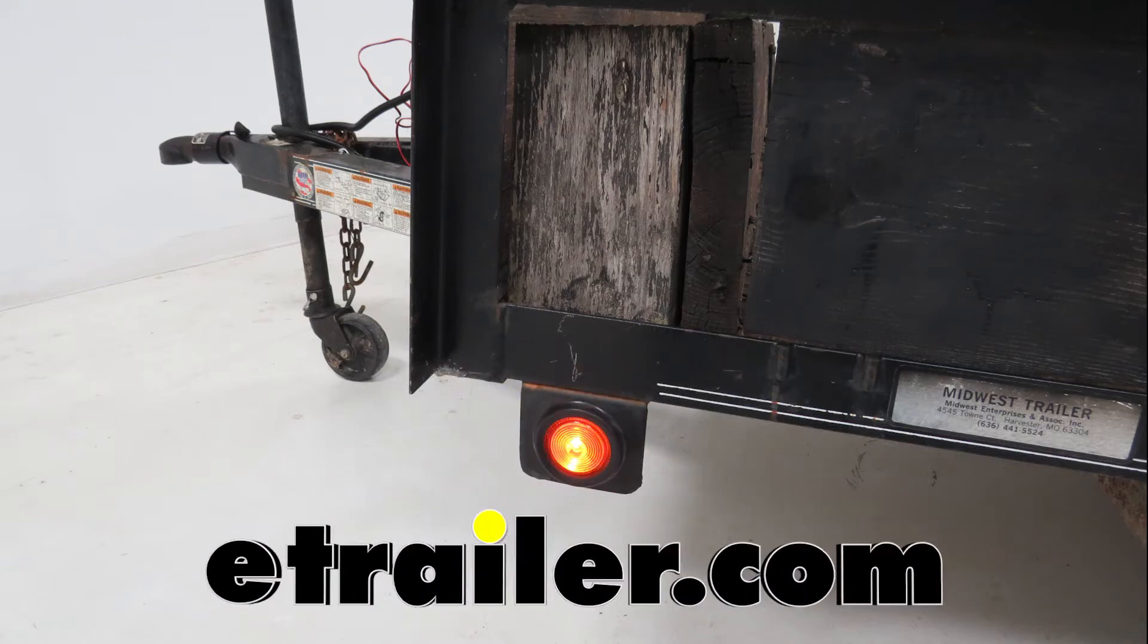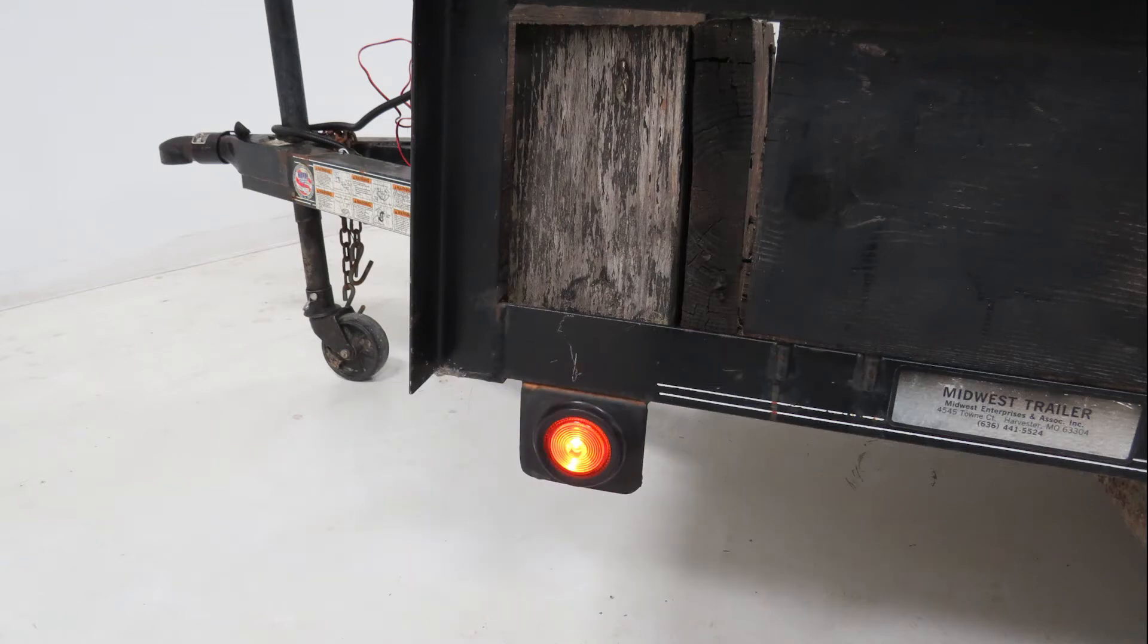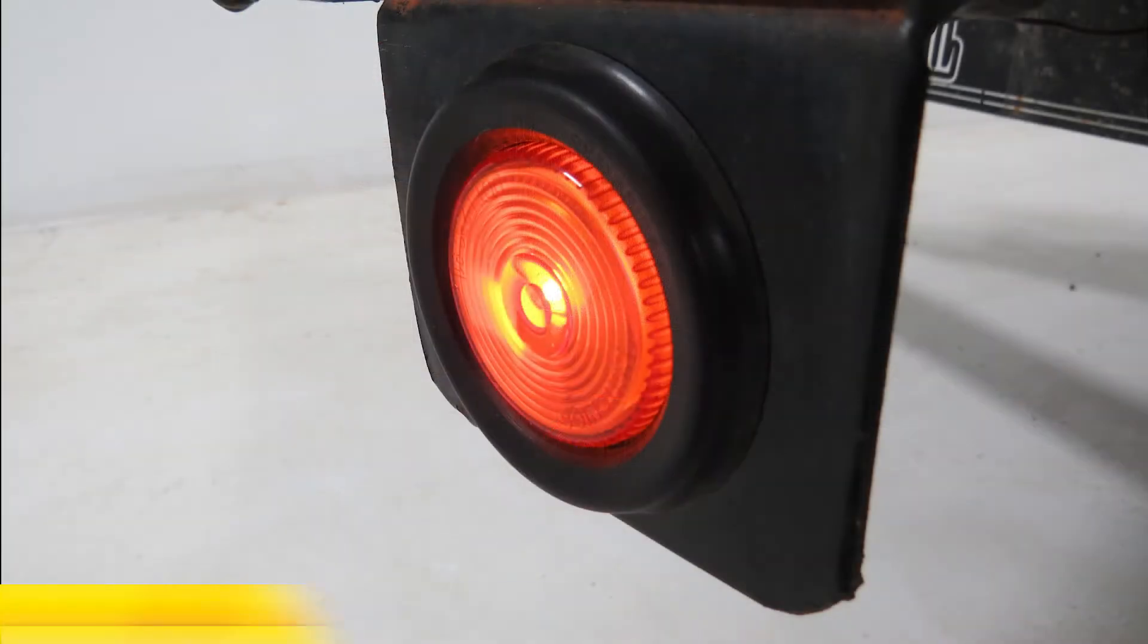Today we'll be taking a look at the Optronics Sealed 2-Inch Round Amber Trailer Clearance and Side Marker Light, part number MC-53AB.